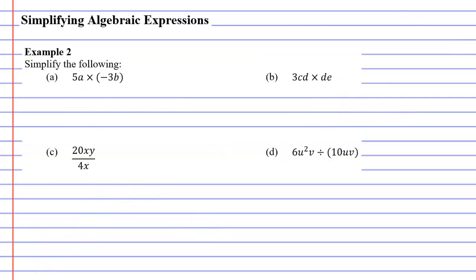All right, let's get into our example now. Example 2, question a, we're going to simplify all of these. And you might remember that when you multiply, you first multiply the numbers. So 5 times negative 3 will give us negative 15. And then we see we have the pronumerals a and b. So I'm going to write them next to my negative 15. I get negative 15ab.